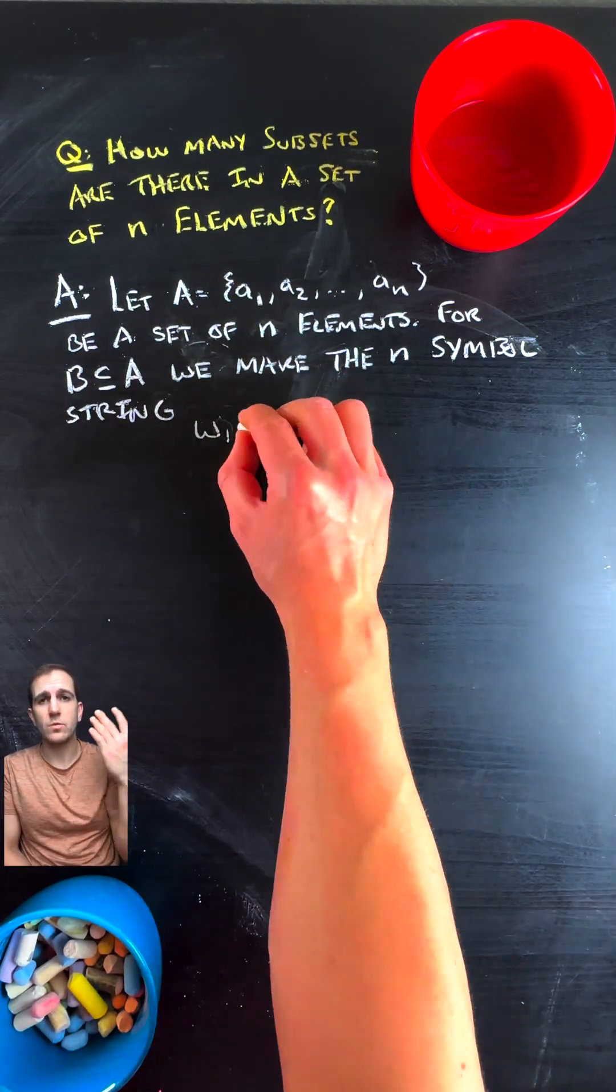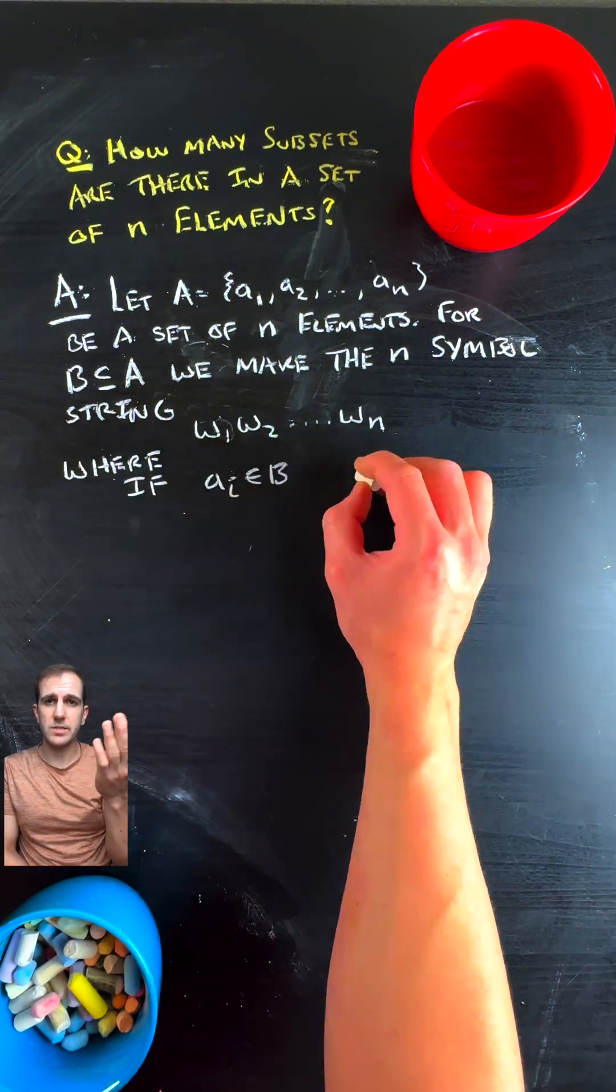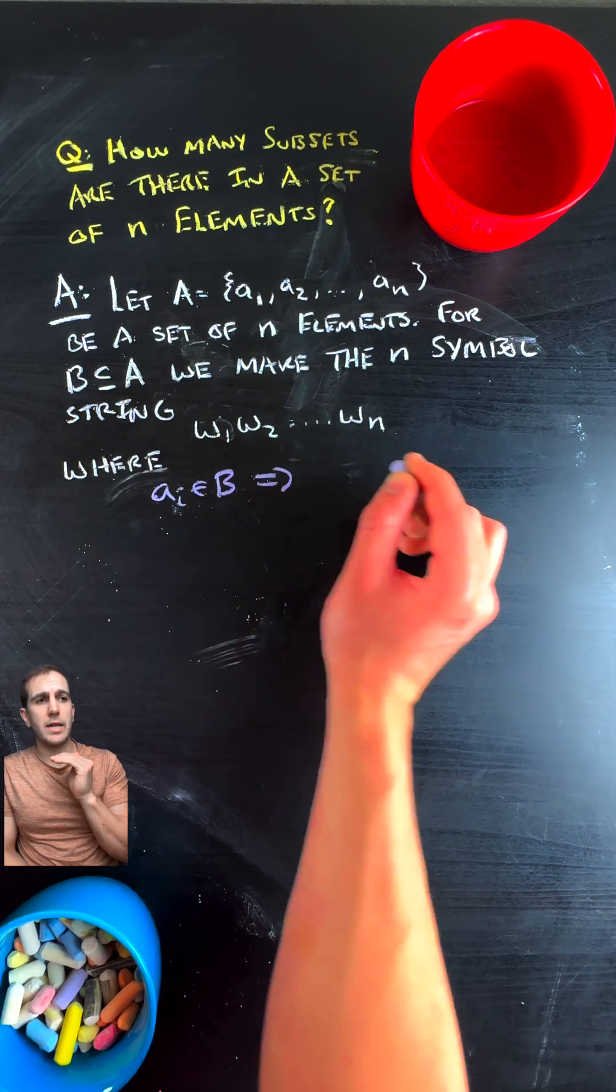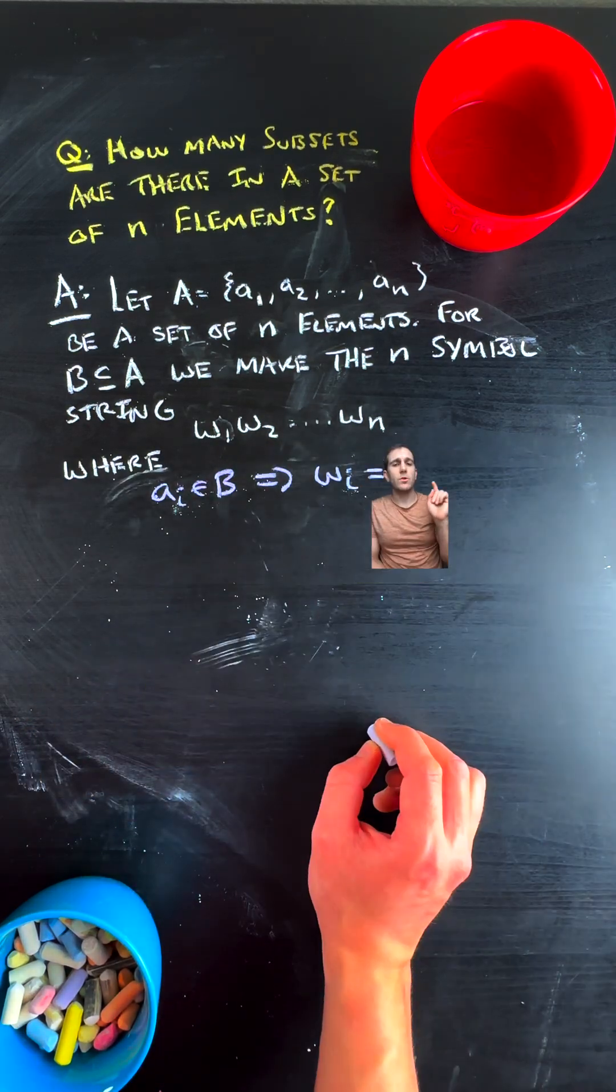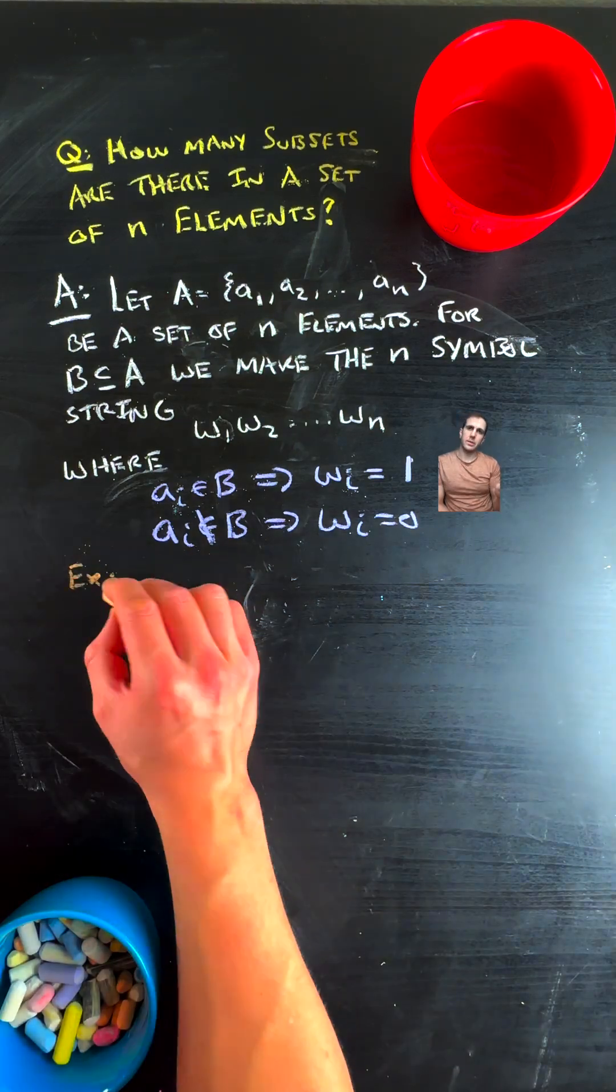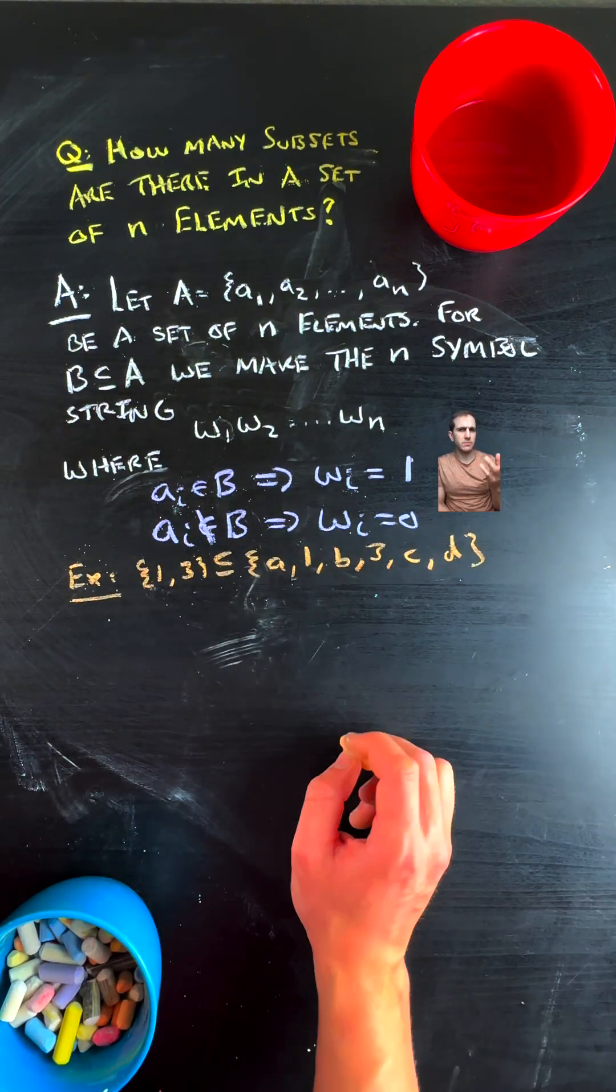We go ahead and take some arbitrary set of n distinct elements, and for each element in our original set, we go ahead and say you get a zero if you are not in the subset, and you get a one if you are in the subset. This is like a characteristic function thing.